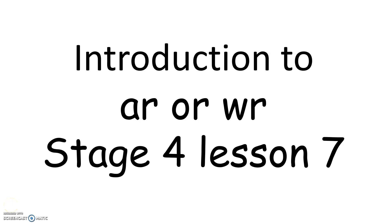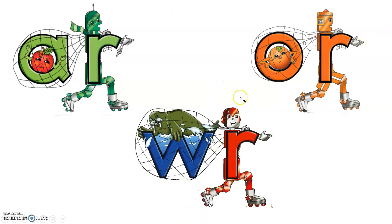Hello, it's Teacher Joanne and I'm here to teach you Stage 4 Lesson 7: A, O, and Ur. In this lesson you're going to see two characters that we have never seen before and two that are very familiar already — Walter Wallace and Red Robot.